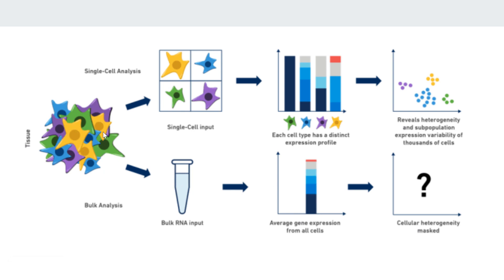Now with the advantage of single cell analysis, we can split the tissue into different cells. In this hypothetical example, let's say we have four separate cells. We can study them separately and obtain the gene expression profile of individual cells. We can see that each cell is different with respect to its gene expression profile — each cell is distinct. So we can say that in this tissue, four different cell types are present.